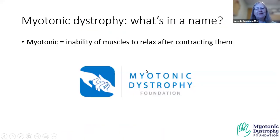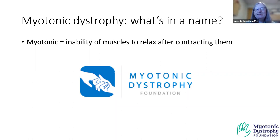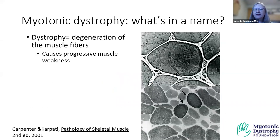Myotonic dystrophy is distinct from other muscular dystrophies. Myotonia is one of the chief characteristics — it refers to the inability of the muscles to relax after contracting. In the early iconography of the foundation, this is demonstrated by the difficulty in relaxing after grip. Under the microscope, we see the dystrophic aspect: degeneration of muscle fibers over time, showing that this is a progressive disorder causing progressive muscle weakness.